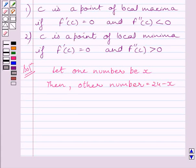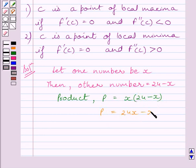Let the product of the numbers be p, which is given by x(24 - x). We can write product p = 24x - x². Differentiating both sides with respect to x, we get dp/dx = 24 - 2x.